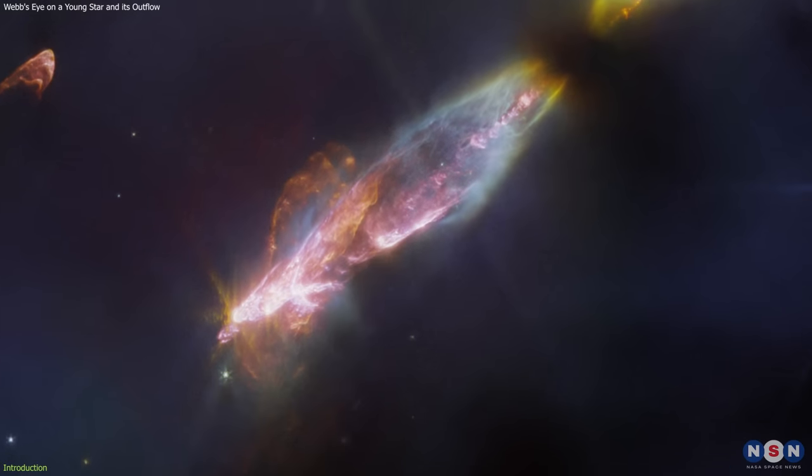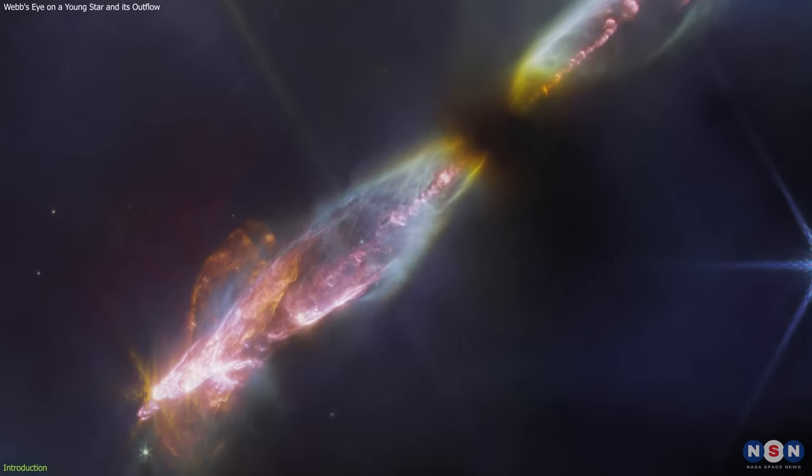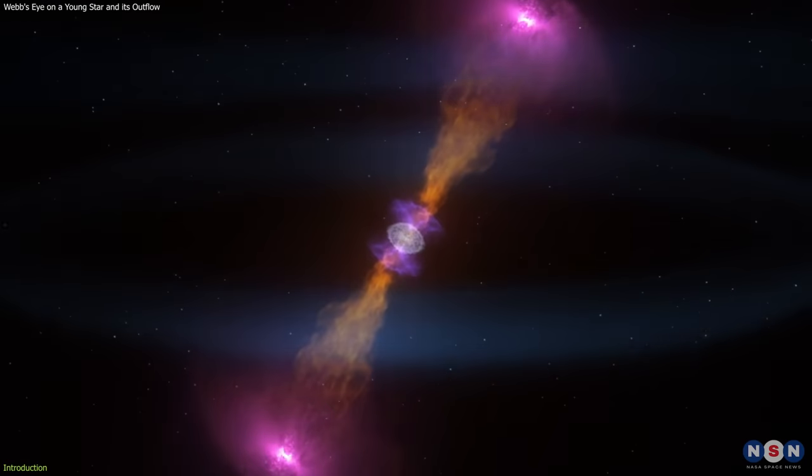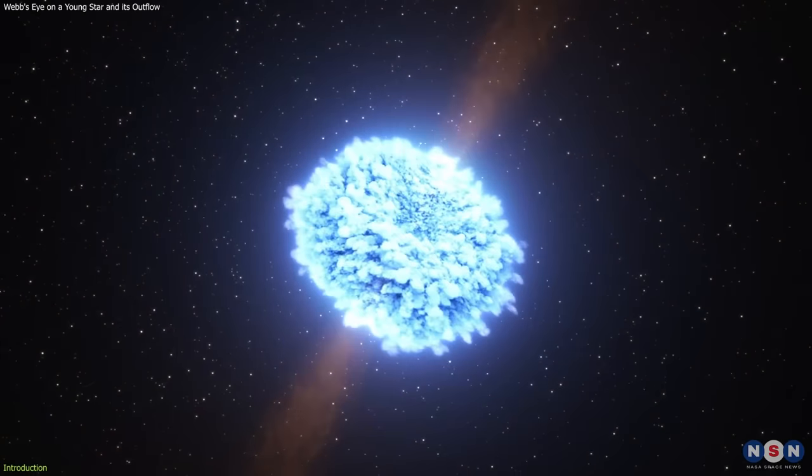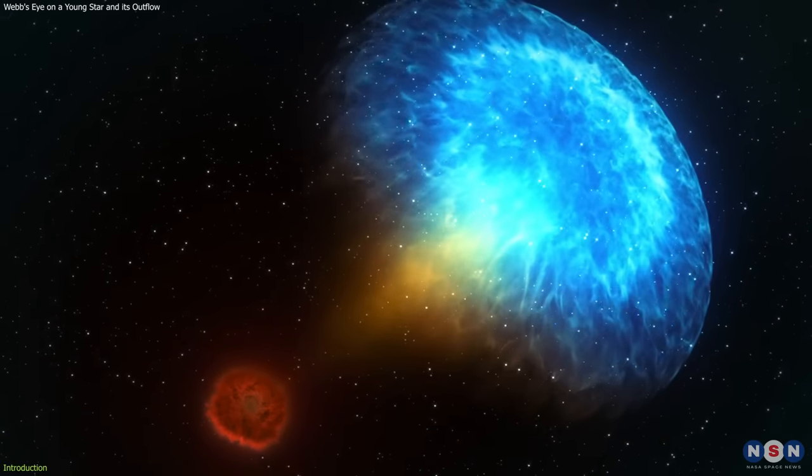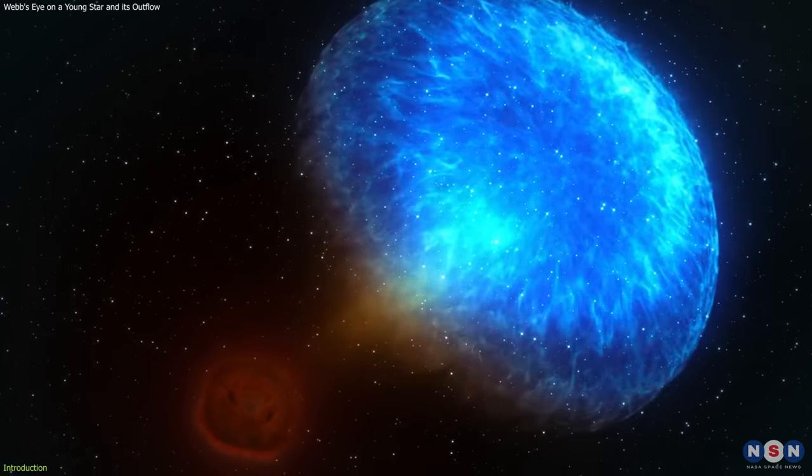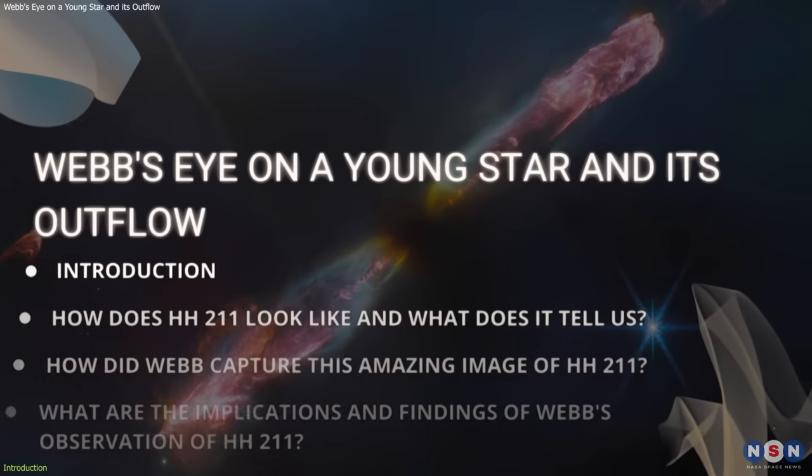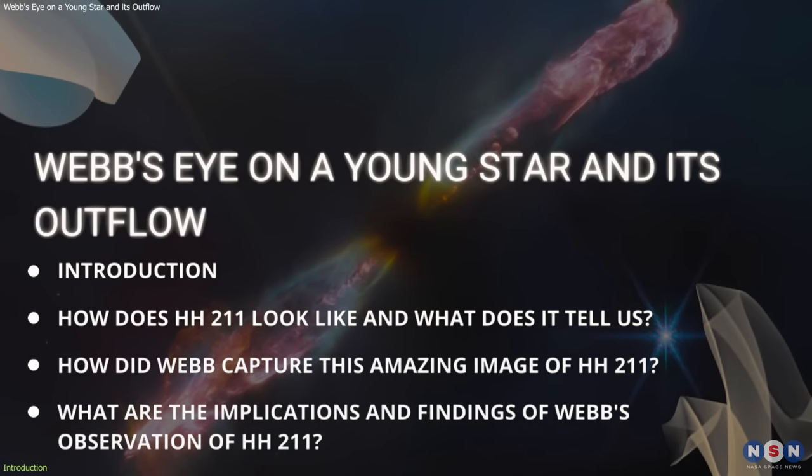This image reveals new clues about the structure and dynamics of the outflow, which is a stream of gas and dust ejected from the star at supersonic speeds. The outflow is important for understanding how the star forms and interacts with its environment. In this video, we will explain what this image shows, how Webb captured it, and why it is so important for astronomy.